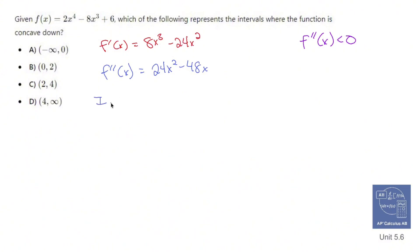Now what I need to do is find the inflection points, and the inflection points exist when the second derivative is equal to 0. So let's take this guy and set it equal to 0. 0 equals, let's factor out not only a 24, but also an x. So 24x times the quantity x minus 2. So my inflection points are going to be x equals 0 and x equals 2.